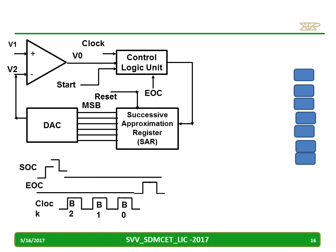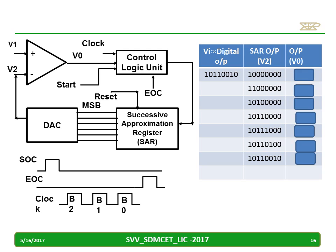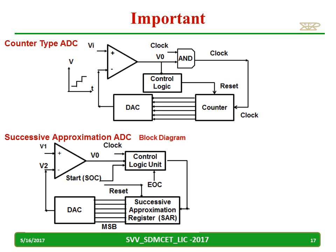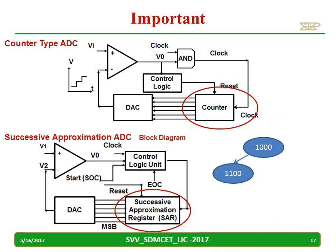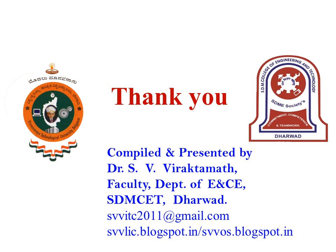To summarize with the same example: Vi with digital equivalent 1 0 1 1 0 0 1 0 — SAR starts with 1 all zeros, output is high so MSB is kept and next bit is made one. Output is low so present bit is cleared, next bit made one. Output is high, MSB kept, next LSB made one — and this continues until the complete output is obtained. The basic difference between counter-type and successive approximation ADC is that instead of a counter counting sequentially, we use a successive approximation register that works based on the binary search algorithm. Thank you for watching.